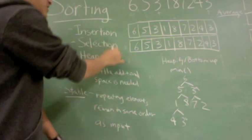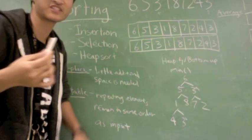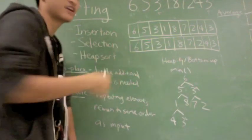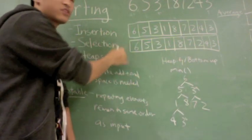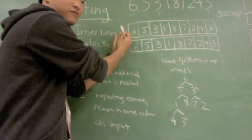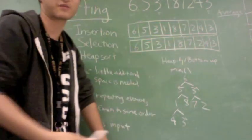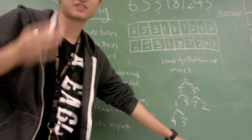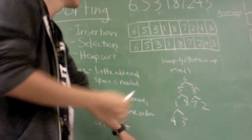First, insertion sort and selection sort are both n squared running time algorithms on average, and both of them involve an in-place sort where there's a sorted part of the array and an unsorted part of the array, and the sorted part of the array is always sorted. That's the invariant here.